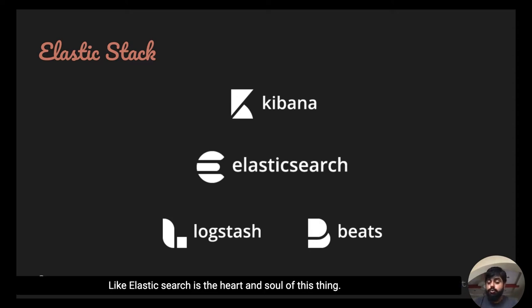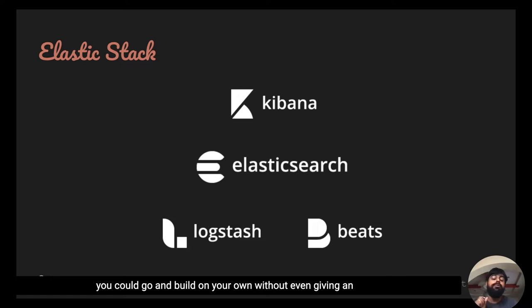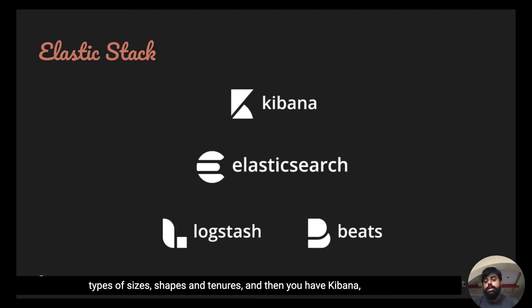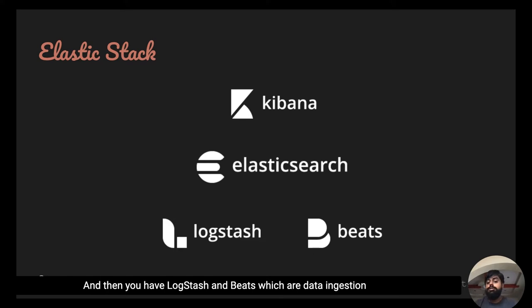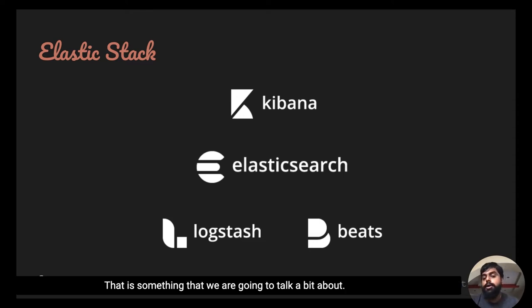Elasticsearch is the heart and soul of the stack. If you are new to it, all of these products are downloadable — you could go to elastic.co/downloads. These are free to download and free to use. Everything I'm showing today you could build on your own without giving an email to anyone, and you could deploy it on any cloud. Elasticsearch is a distributed NoSQL data store and search engine that can ingest a lot of data of different types, shapes, and sizes. Then you have Kibana, which is a visualizer sitting on top of Elasticsearch, and Logstash and Beats, which are data ingestion modules that push data into Elasticsearch. Apart from these, there are many other ingestion-based technologies that can ship data into Elasticsearch — which we'll discuss, along with Beats and APM agents.